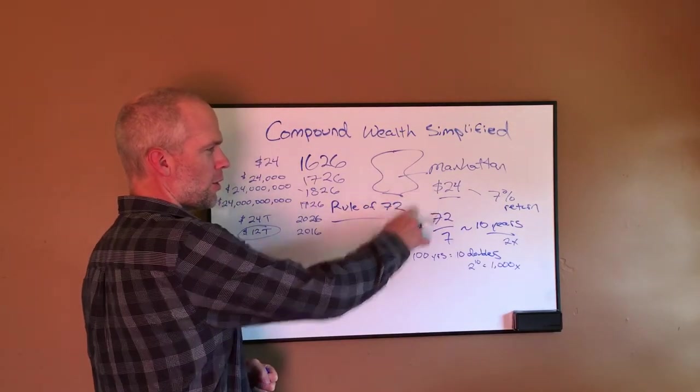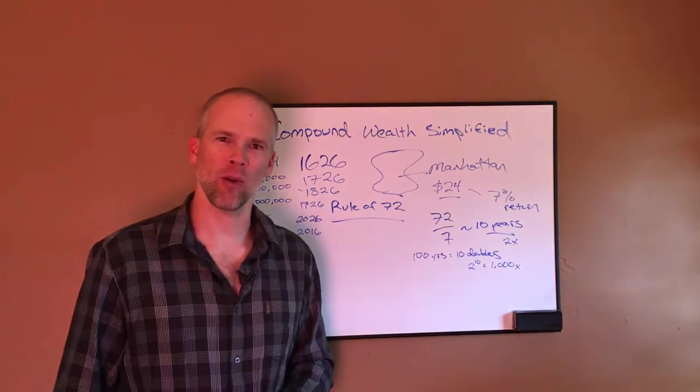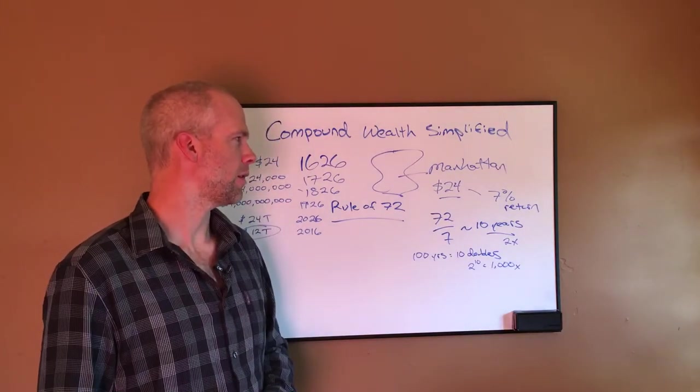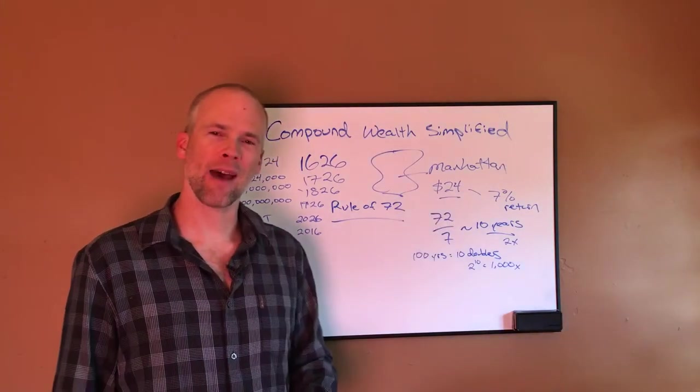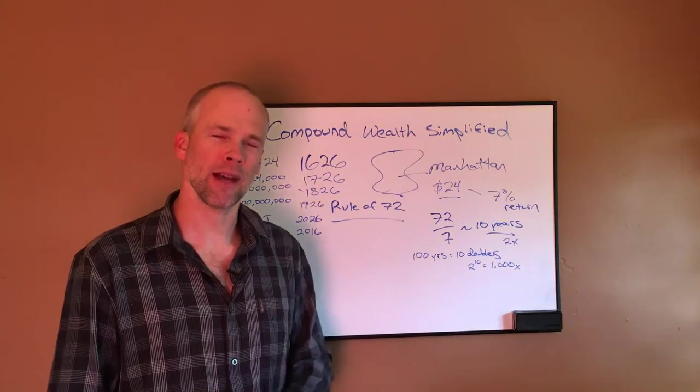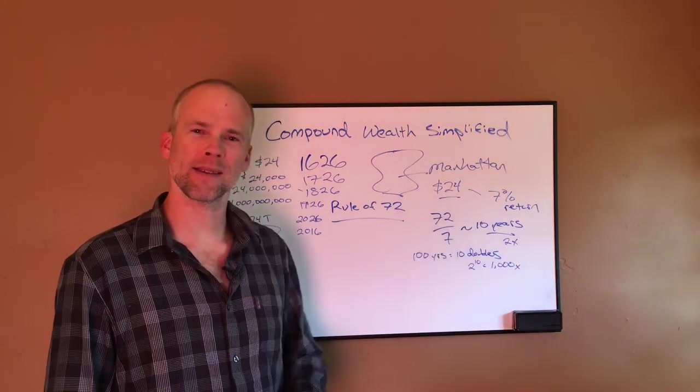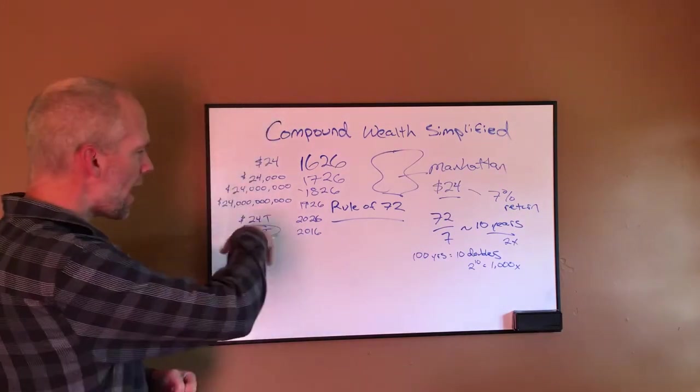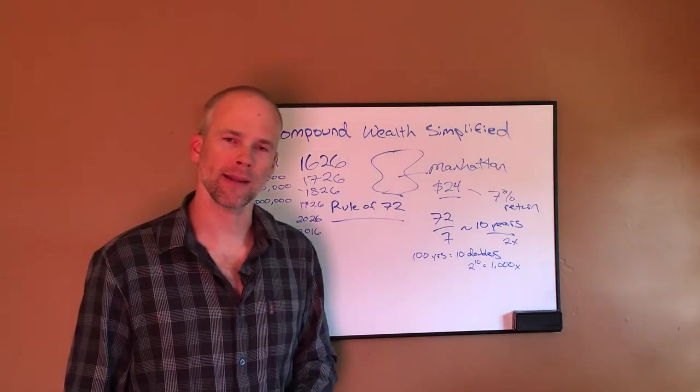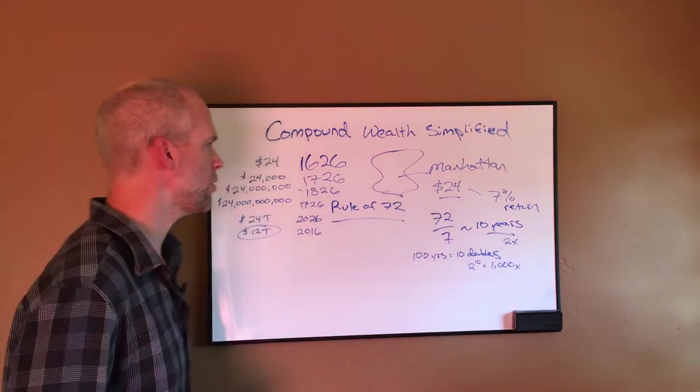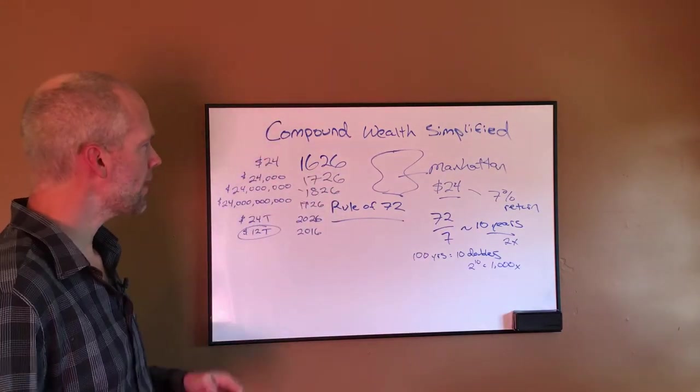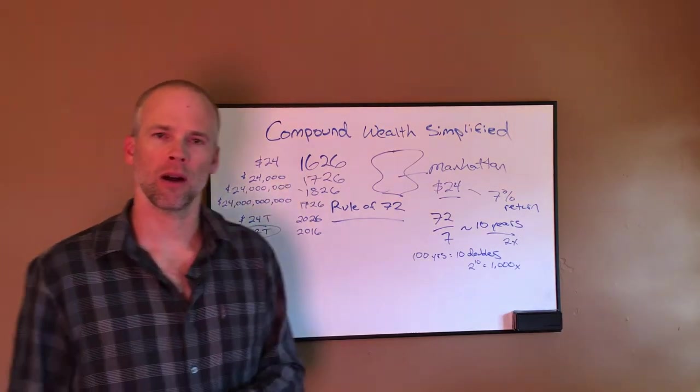So you look at this 24, you think, oh man, they got ripped off. Well, they actually didn't get ripped off. What happened is they didn't have a competent investment advisor. They couldn't make this 7% rate of return. I doubt they have 12 trillion sitting in the bank right now from that original $24. So this is the power of compounding.